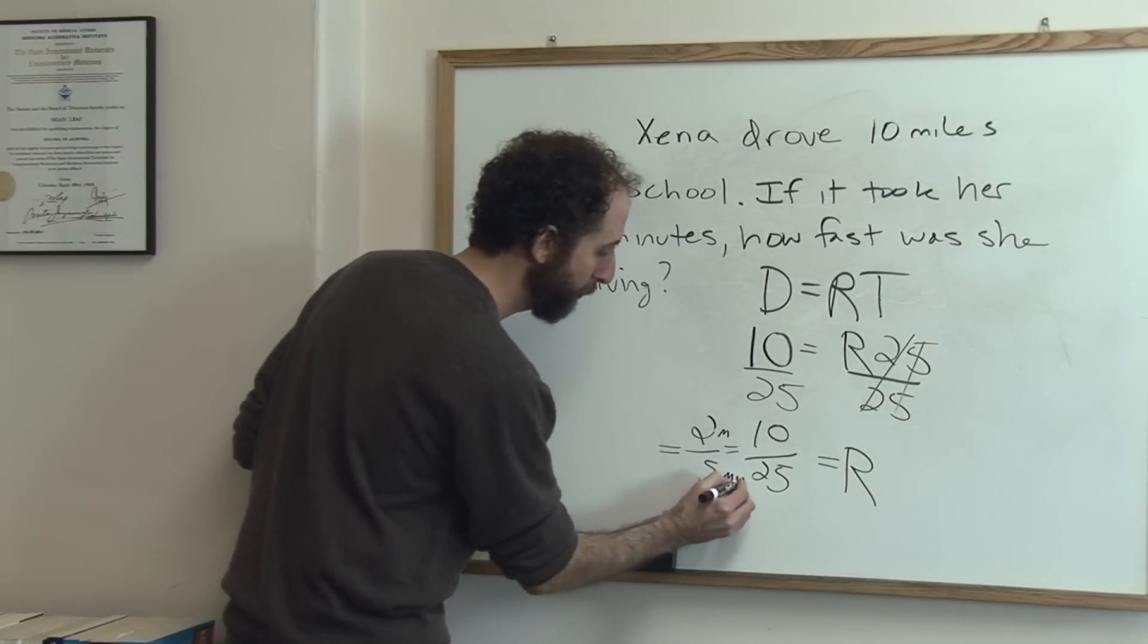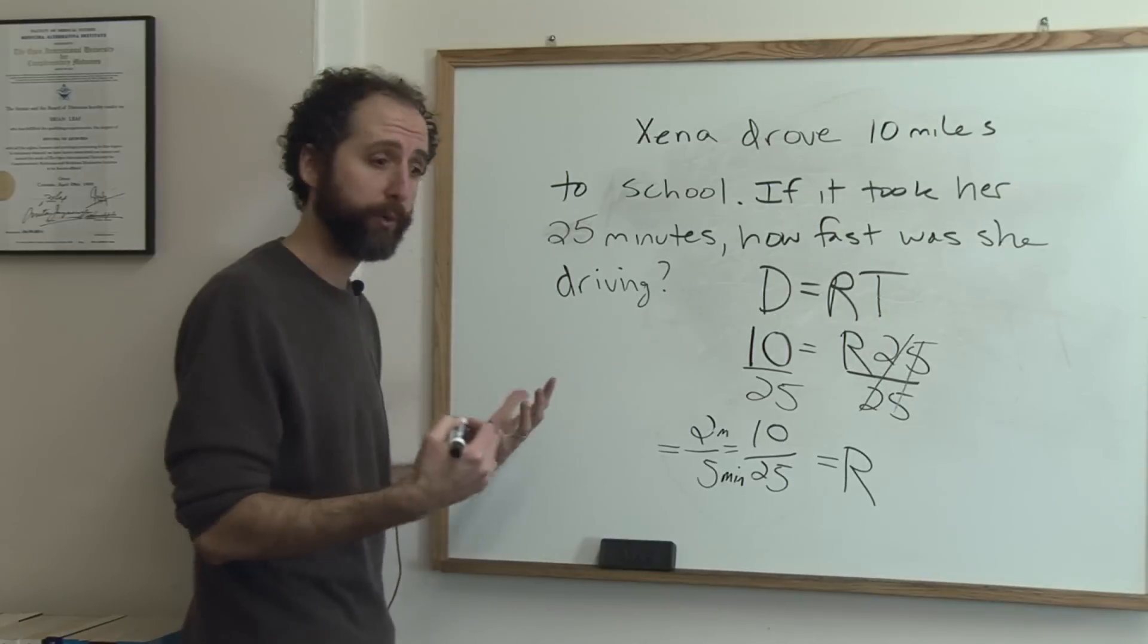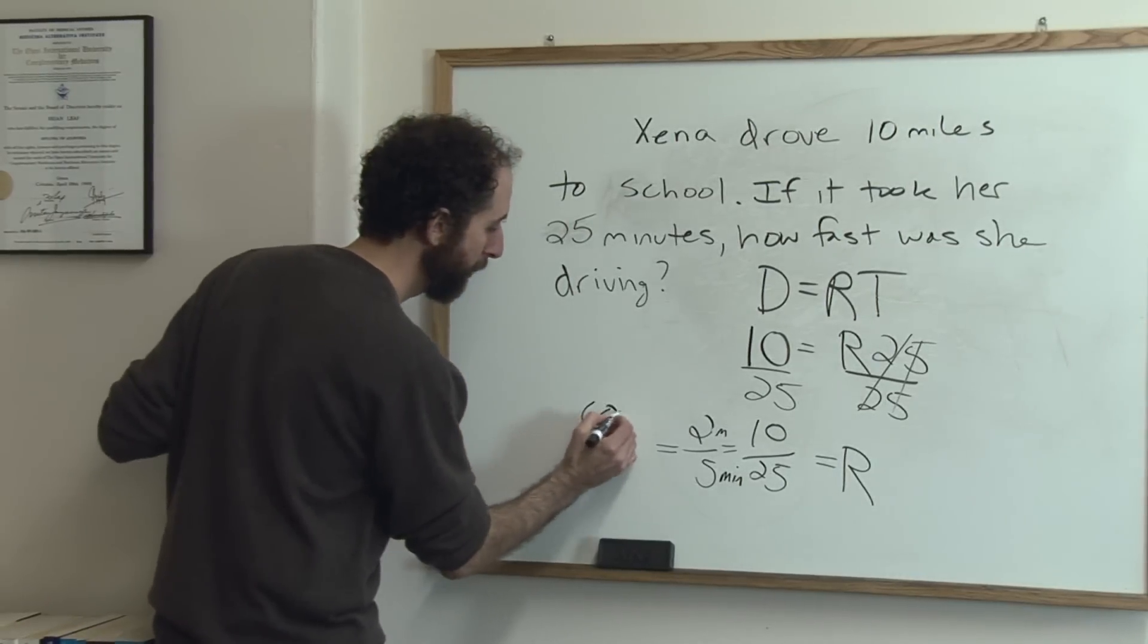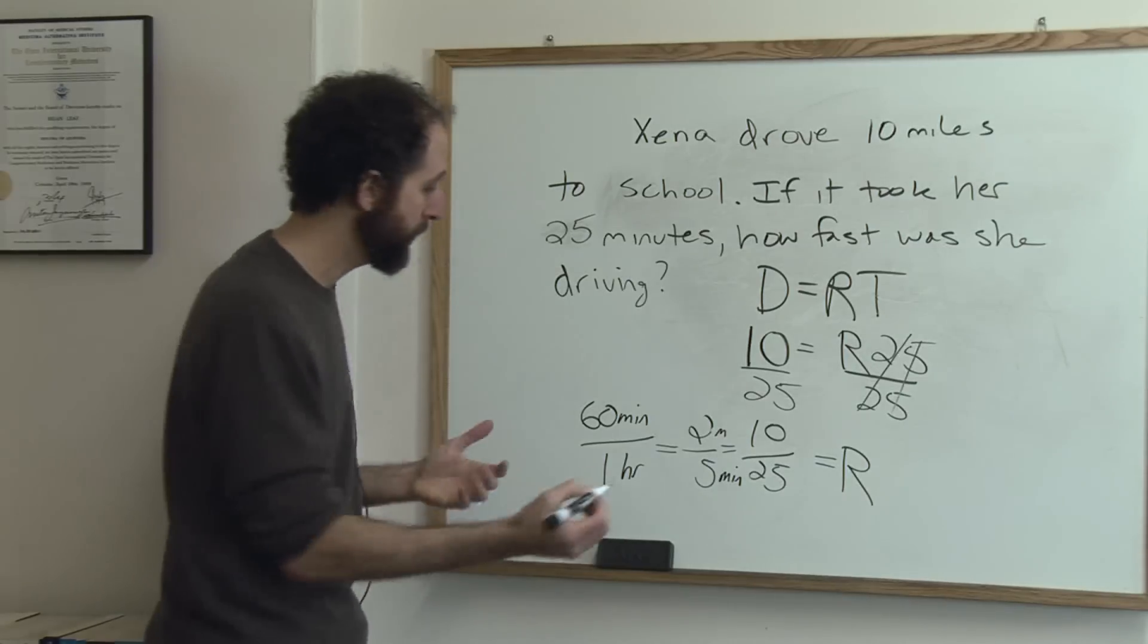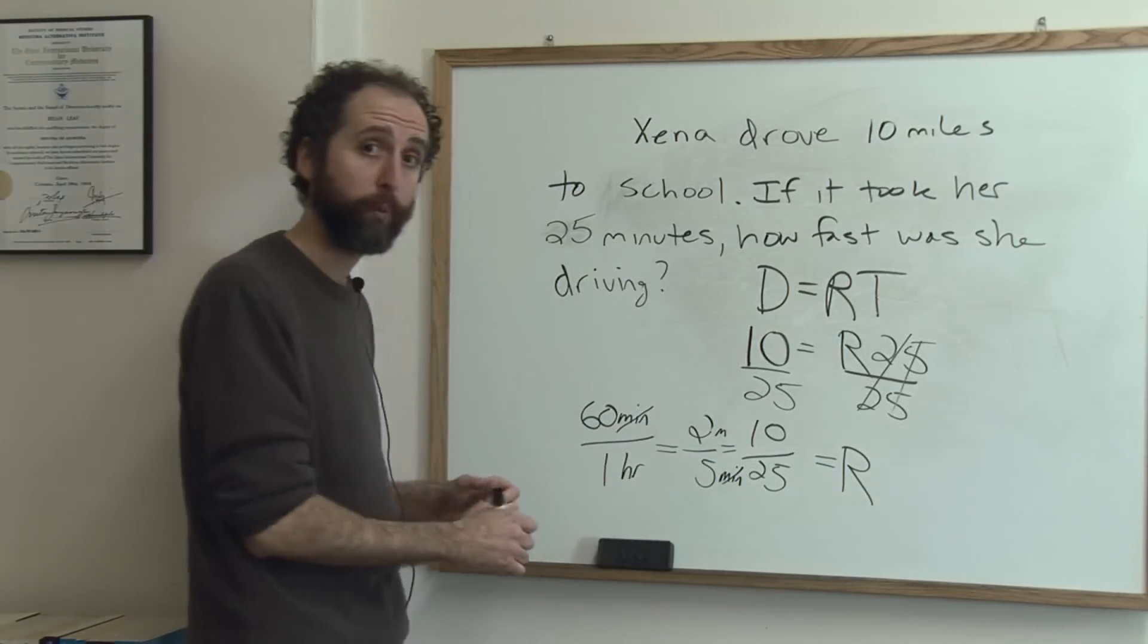But this is minutes. We don't want that. So what we're going to do is multiply by 60 minutes is 1 hour. That's the conversion. And you can see that minutes is going to cancel, which is what we want.